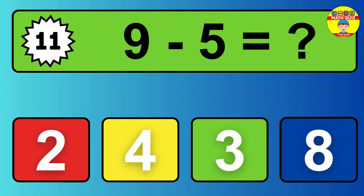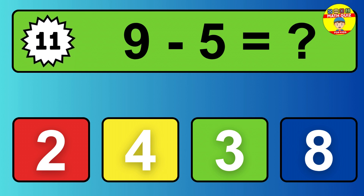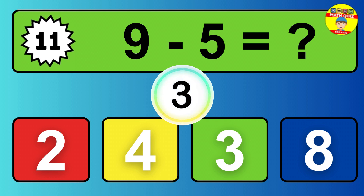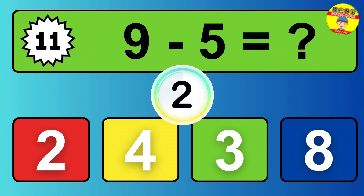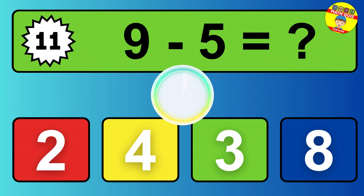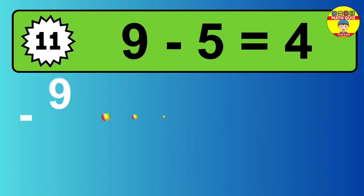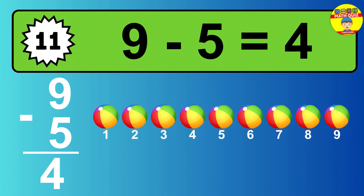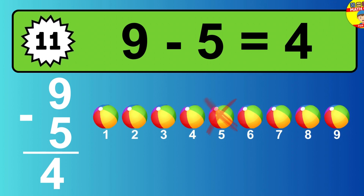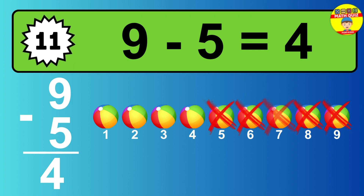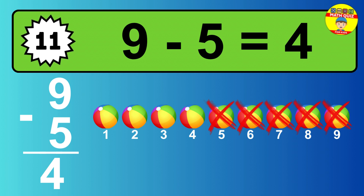Question eleven. Nine minus five equals what? So the answer is, nine minus five is four. Let's count it. One, two, three, four.